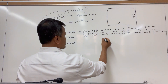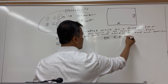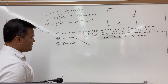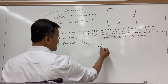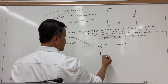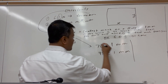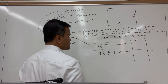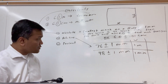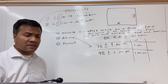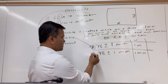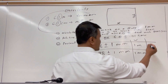For example, absolute uncertainty might be expressed as 6.0 ± 0.01 centimeters. Now, for relative uncertainty, let me give you two examples: 76 ± 1 mm and 48 ± 1 mm. For both cases you have the same absolute uncertainty — one millimeter — so you don't know which measurement is better. Is this measurement better than that one? You don't know.